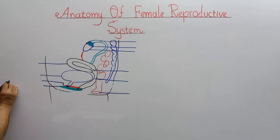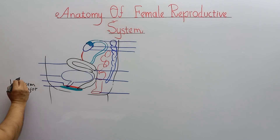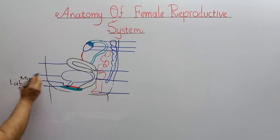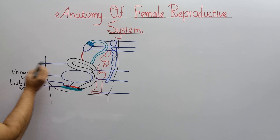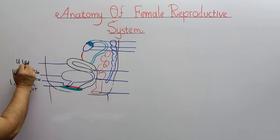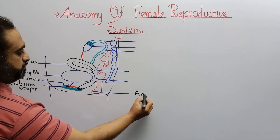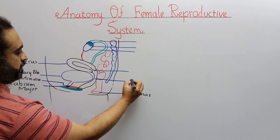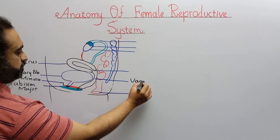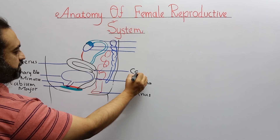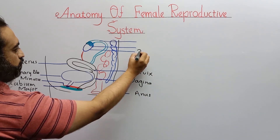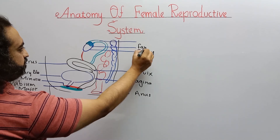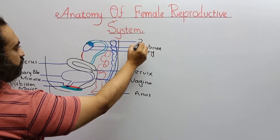To label this view: here is labium majora and minora, here is the urinary bladder, here is the uterus, here is the anus, here is the vagina, here is the cervix — a neck-like structure — and here is the ovary, fimbriae, and oviduct.